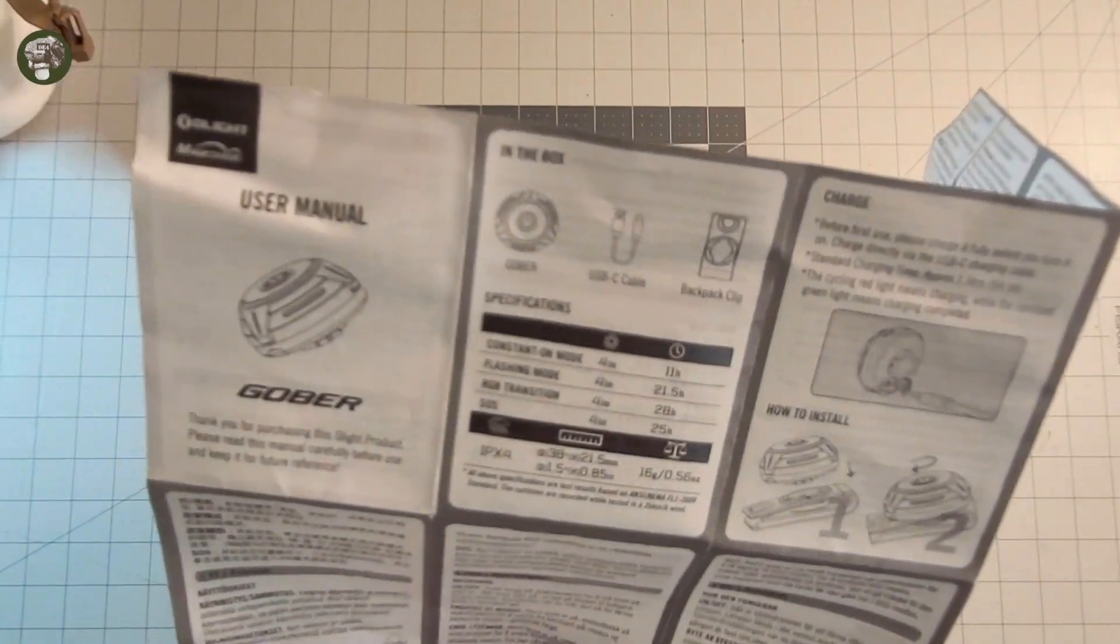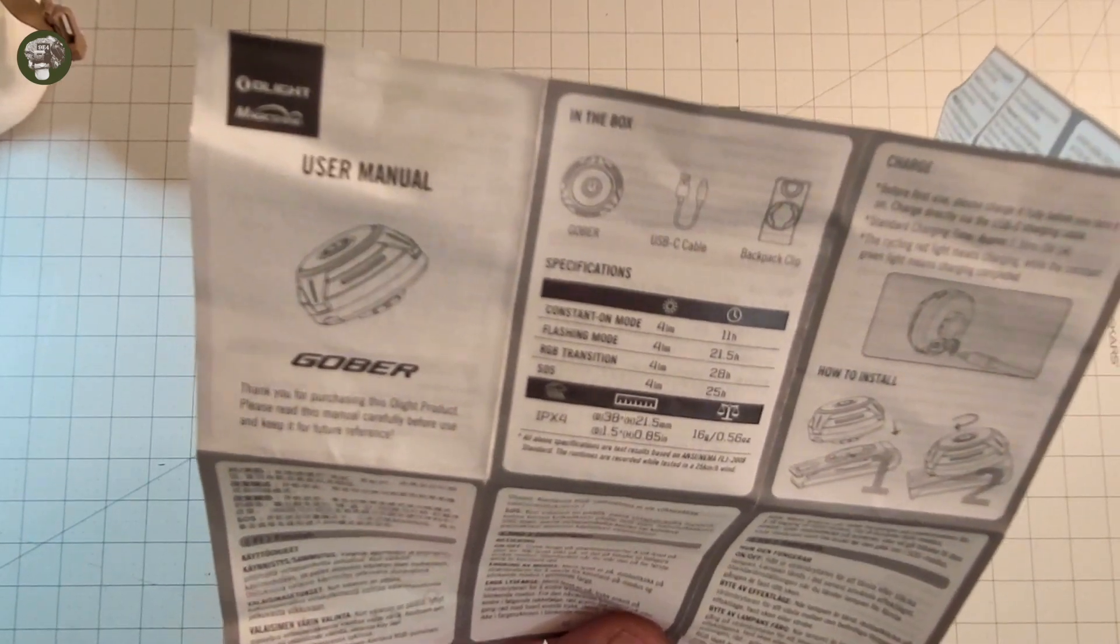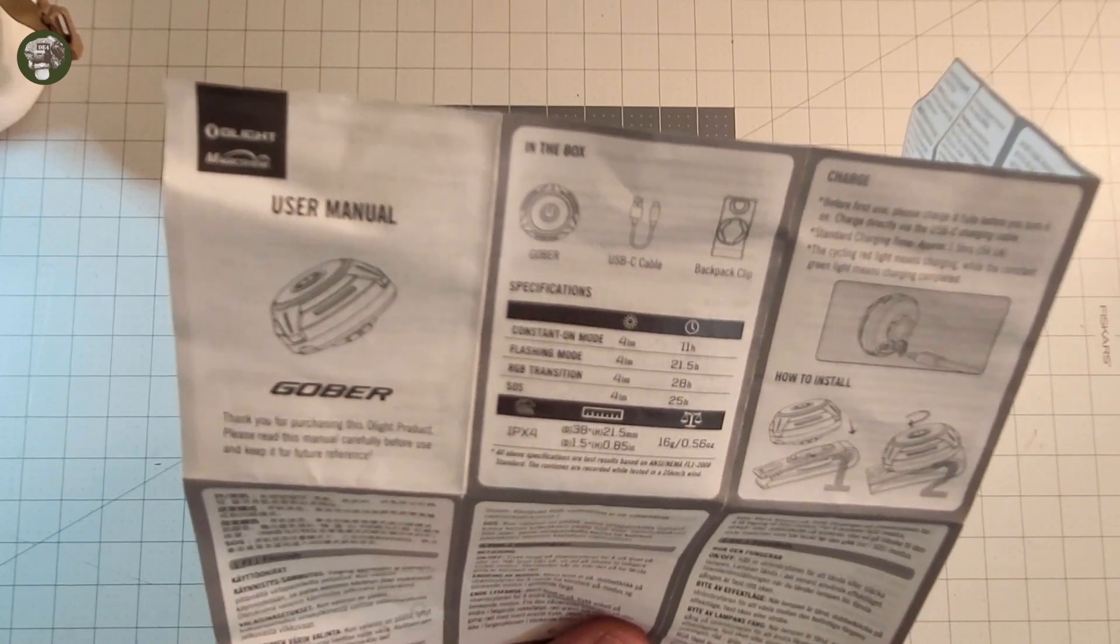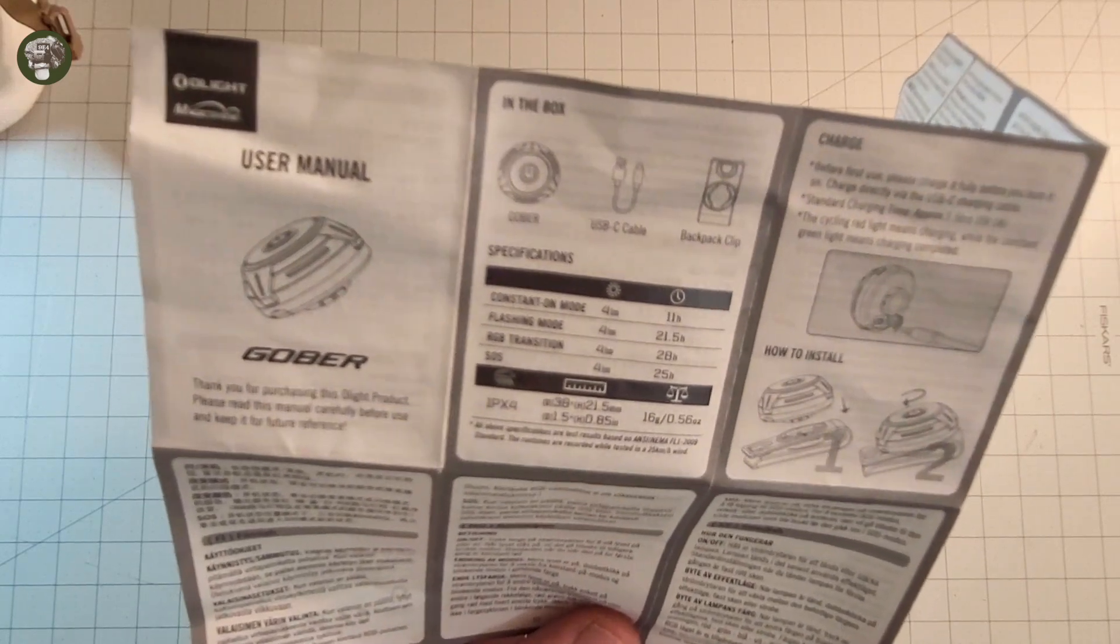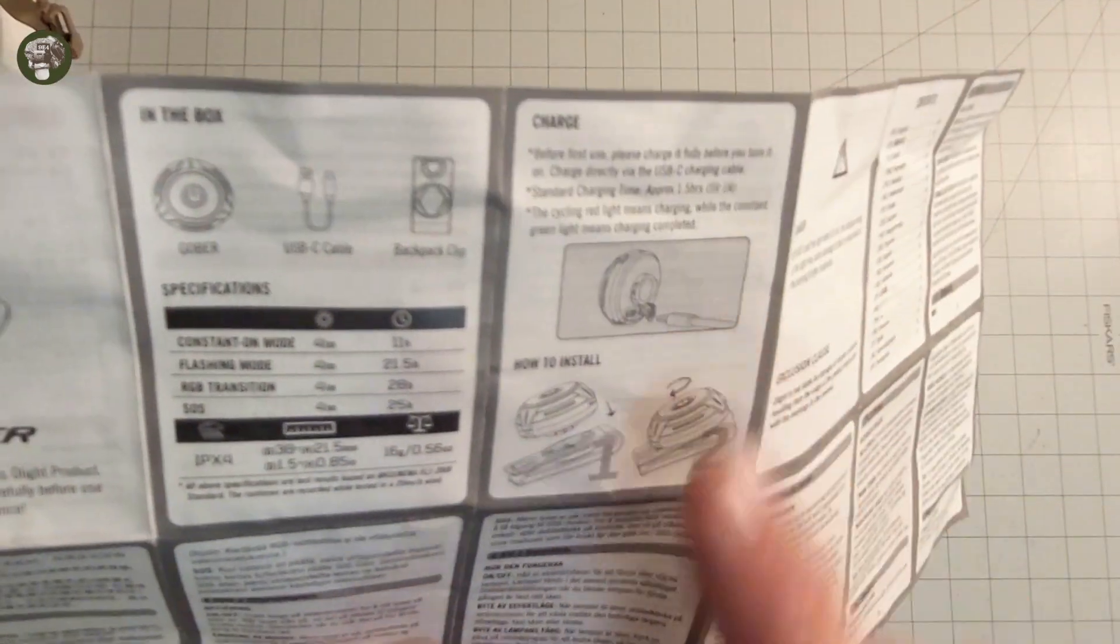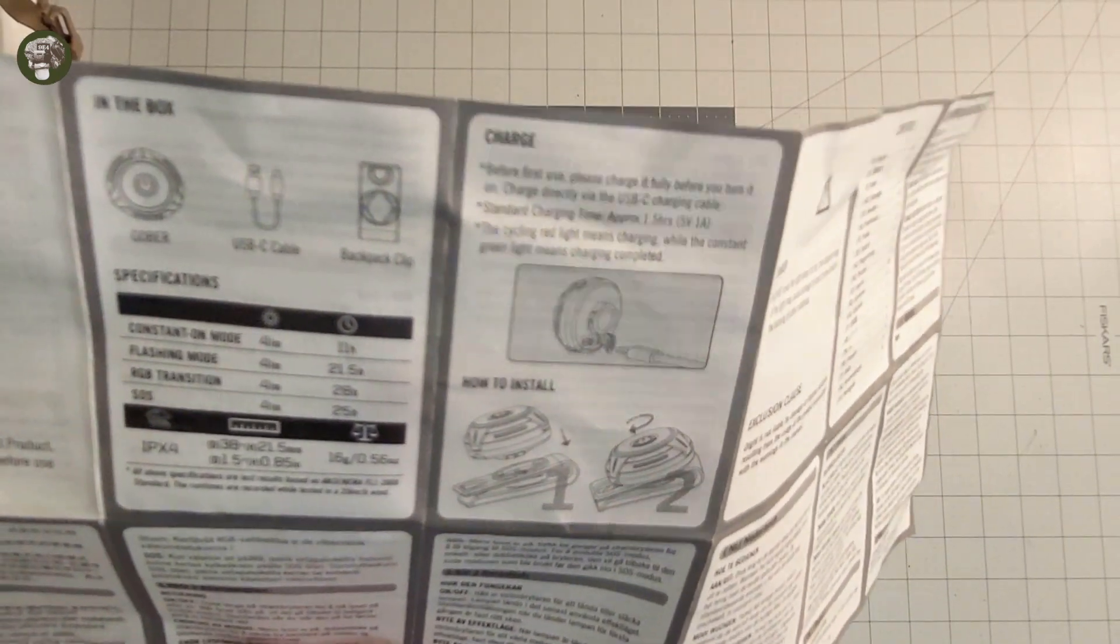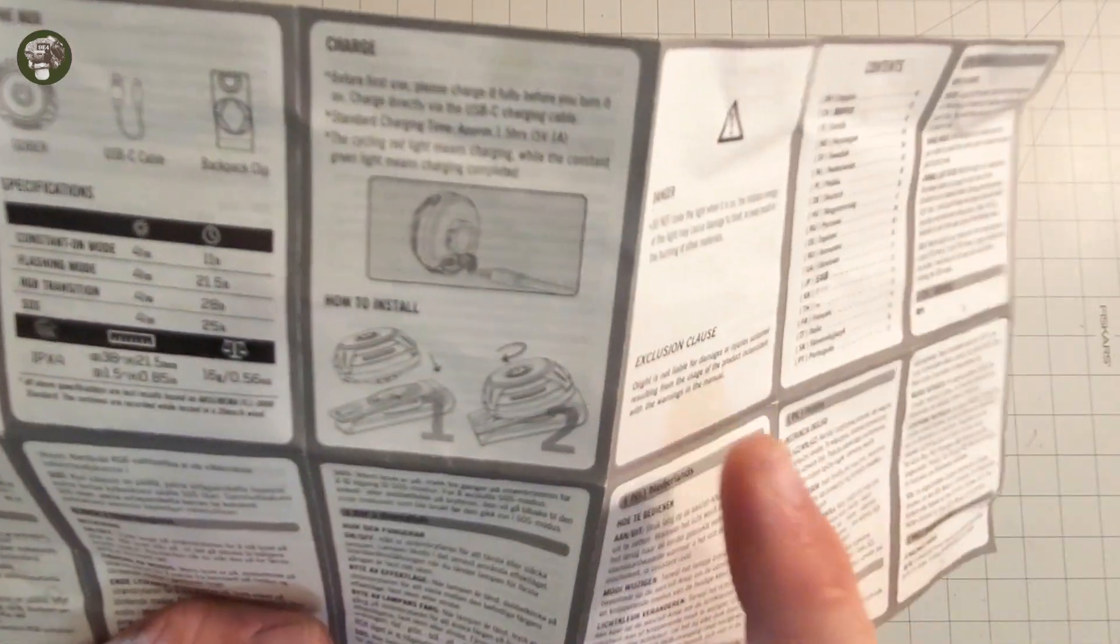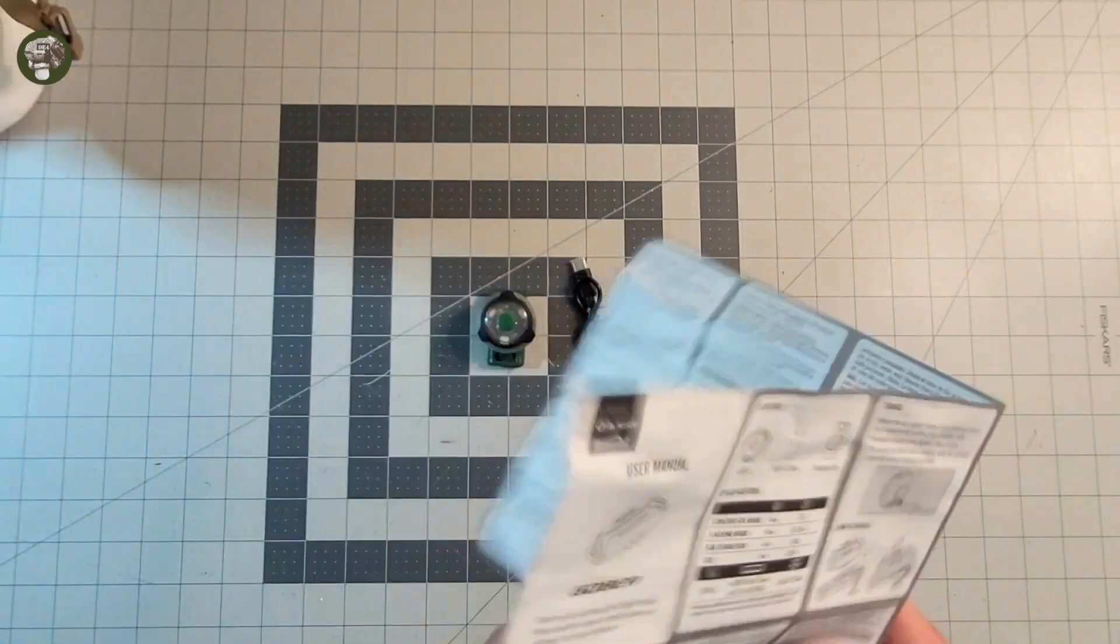IPX4 weather resistance, so you can set this on your kit and not worry about rain. Constant on mode gives you about 11 hours, flashing mode 21.5 hours, RGB transition about 28 hours, and SOS about 25 hours. Installation is a breeze. It recommends you fully charge for about an hour and a half when you first get it, which I did. Then you know, basic boilerplate telling you if you hurt yourself using this light they're not responsible.